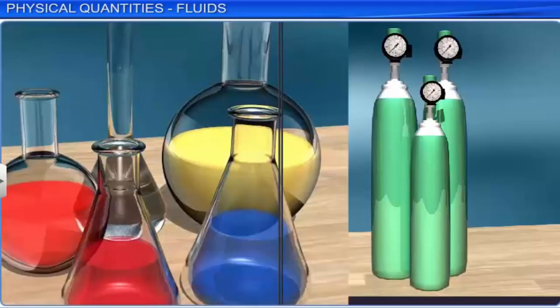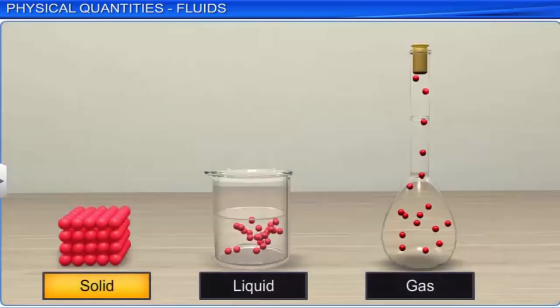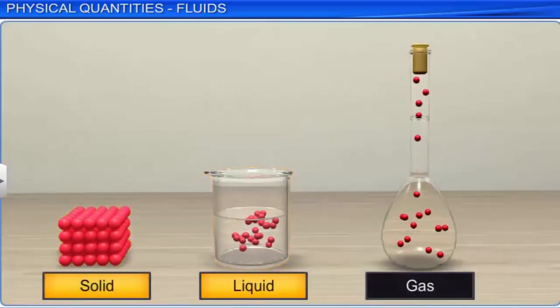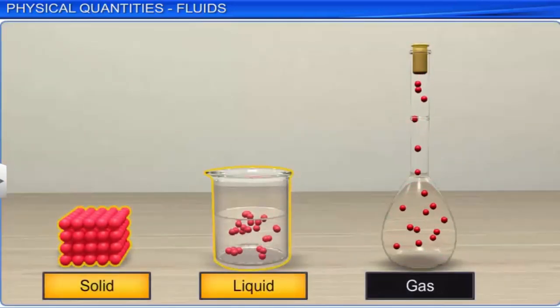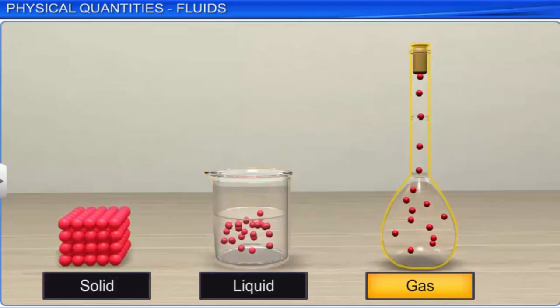A fluid is any matter that has a tendency to flow. All liquids and gases are together referred to as fluids. Solids and liquids have a fixed volume, while the volume of a gas depends on the volume of its container.